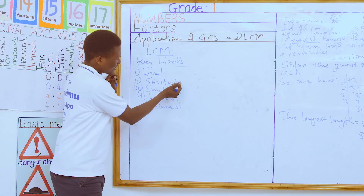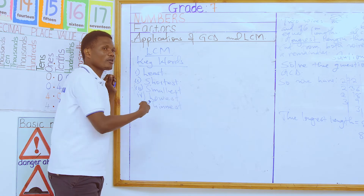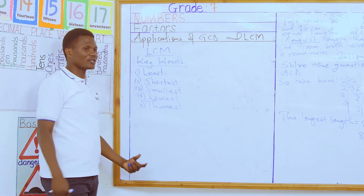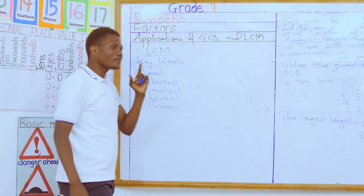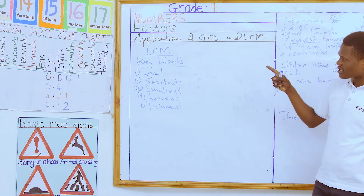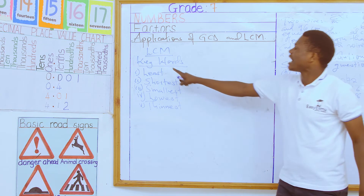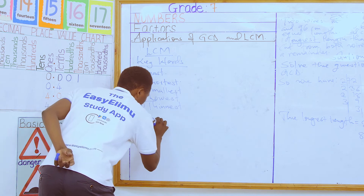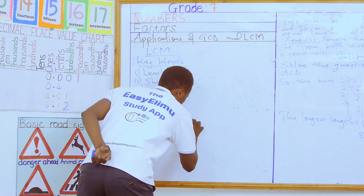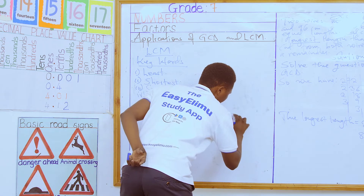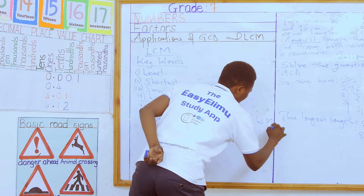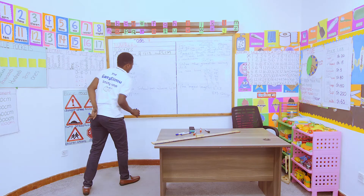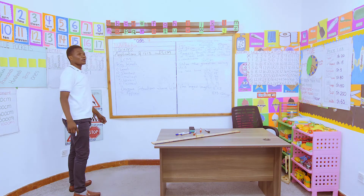These are the keywords you should be looking for when you are given a word statement and you need to decide whether to use GCD or LCM. However, there are some unique situations in mathematics where the concept of LCM is supposed to be applied even though none of those keywords is given.